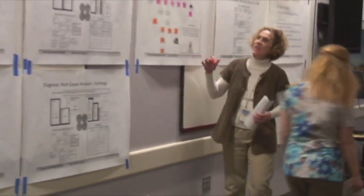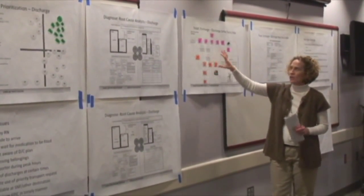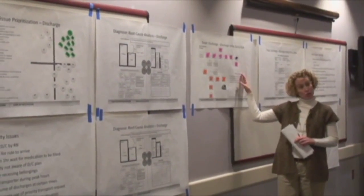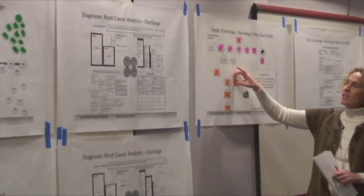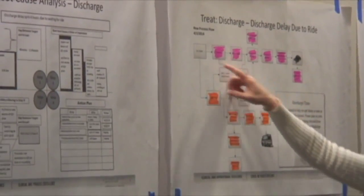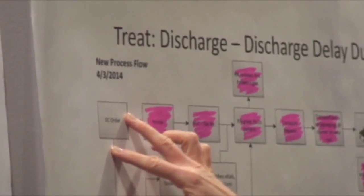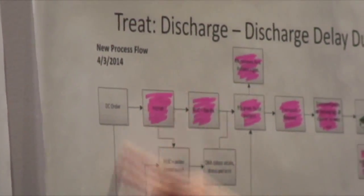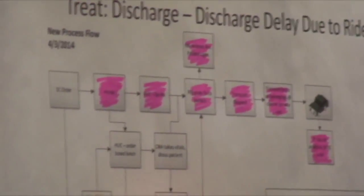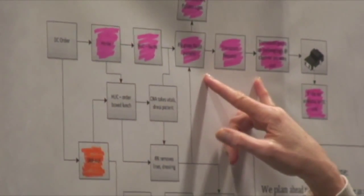After our root cause analysis, we remapped our process flow in a new future state. Taking out all the non-value-added splats we identified, we have a much more streamlined process. Once the discharge order is written, the team already knows ahead of time whether the discharge destination is home, a skilled nursing facility, an adult family home, or other location. There are now just a few defined steps required for the patient to be fully discharged from the hospital.